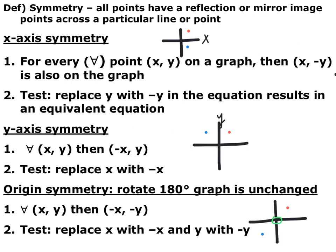The last one is origin symmetry. A graph can be rotated 180 degrees. So if you have a point (x, y), then every point (negative x, negative y) also exists. If you have one in quadrant one, you have one in quadrant three. If you have one in quadrant two, you have one in quadrant four. The test for that is you replace both x and y with their opposites and see if the equation simplifies down.